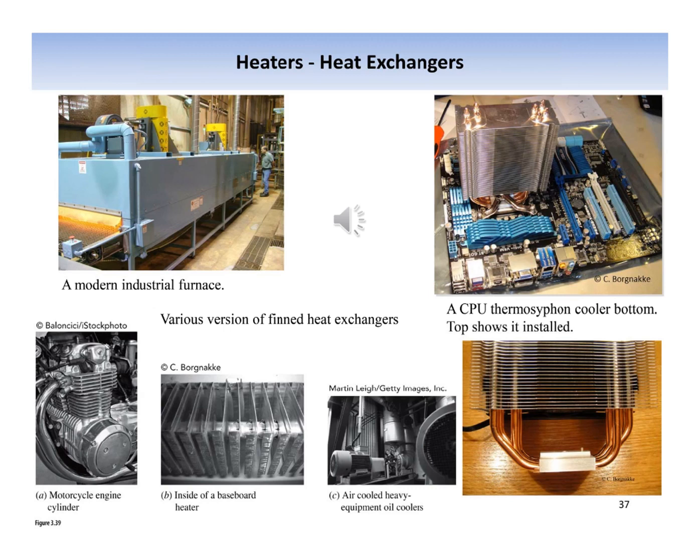A heat pipe is used for enhanced cooling capacity of a central processing unit (CPU) in a computer. The small aluminum block with the copper piping attaches to the top of the CPU unit. Inside the copper tubing is a liquid that boils at a temperature of about 60°C. The vapor rises to the top, where the copper piping is connected to the fins, and a fan blows air through the fins, thus cooling and condensing the vapor. The liquid falls with gravity or is transported by a wick back to the volume on top of the CPU unit. The heat pipe allows boiling heat transfer with a high transfer coefficient to act on the small area of the CPU.